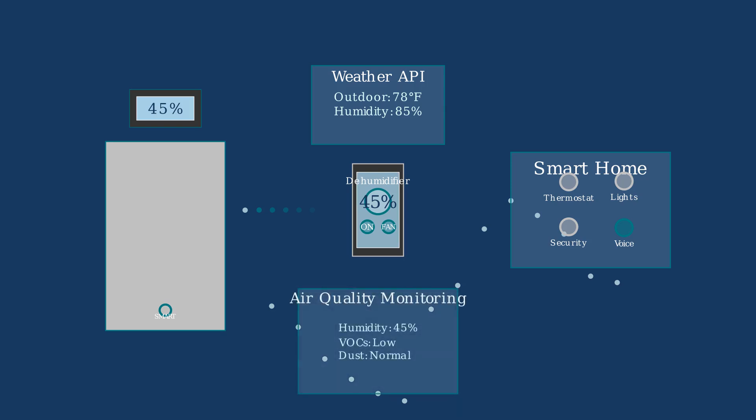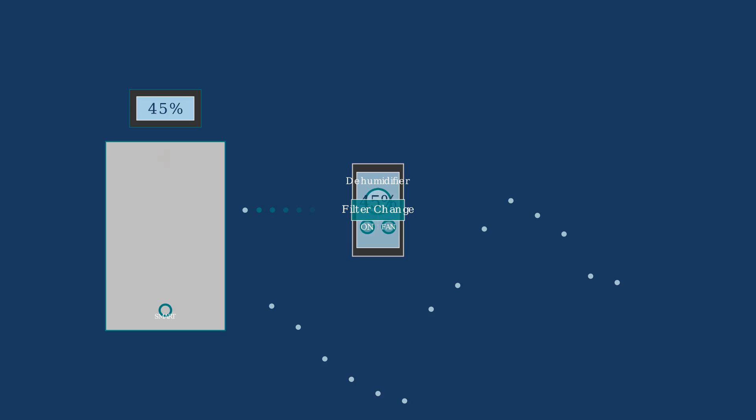Beyond humidity control, advanced models include comprehensive air quality sensors that detect airborne pollutants, allergens, and volatile organic compounds. Smart dehumidifiers also provide timely maintenance alerts, notifying you when filters need cleaning or when the water tank requires emptying.